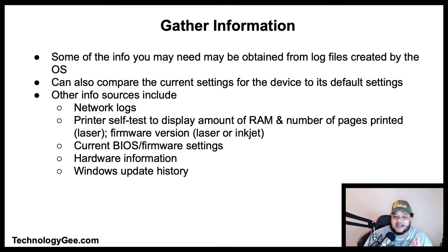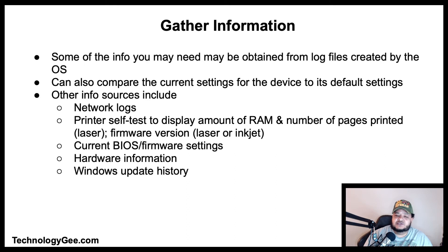Also record your network and software settings. Start the process by gathering information — some of the information you may need can be obtained from log files created by the operating system. You can also compare the current settings for the device against its default settings. Other sources include network logs, printer self-tests, current BIOS firmware settings, hardware information, and Windows update history.